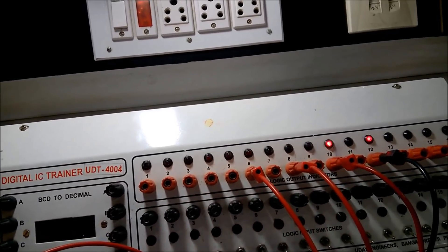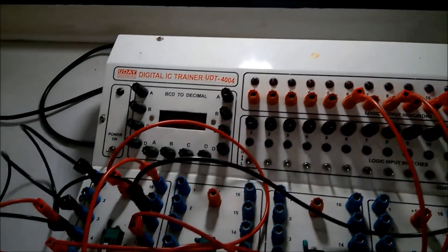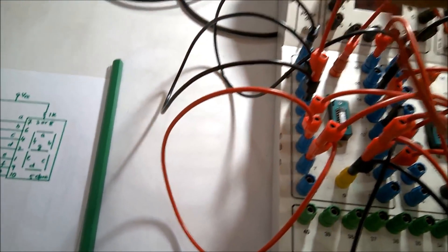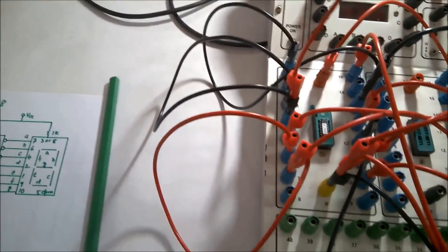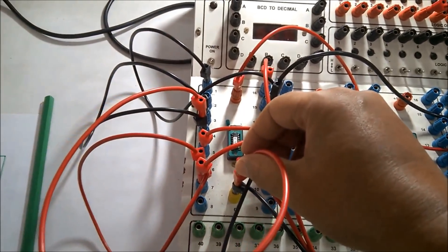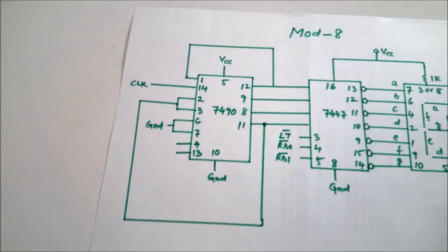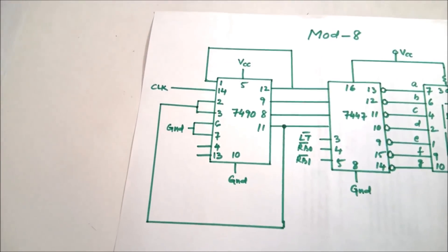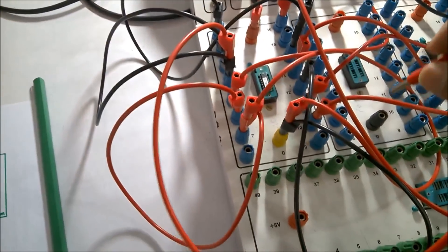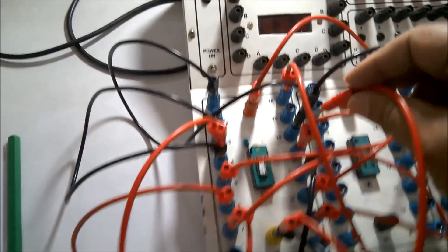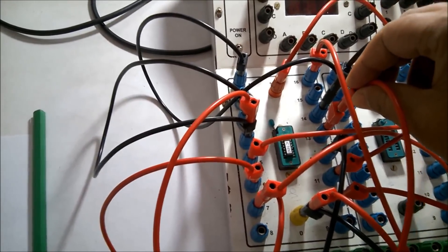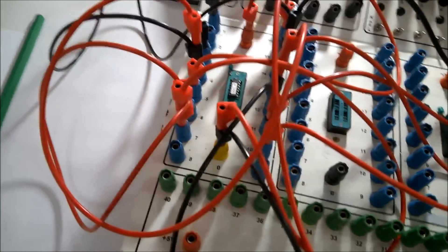Now I will switch it off and make the changes. I had pins 2 and 3 — the reset pins — connected to ground. Now instead of grounding, I am connecting them to pin number 11. I am taking the wire out from ground and putting it to pin number 11. Instead of mod 10, it will now become a mod 8.